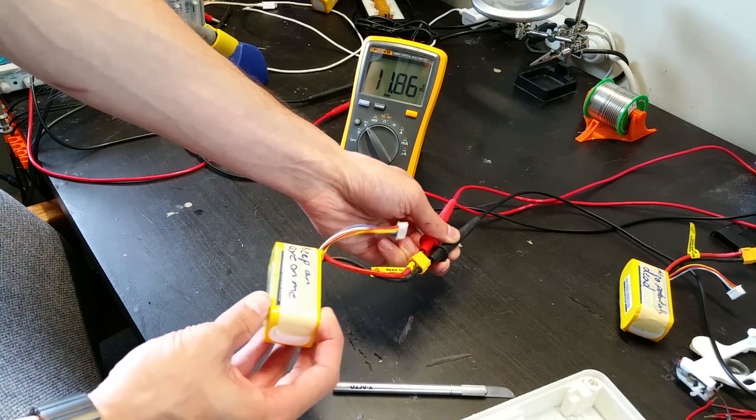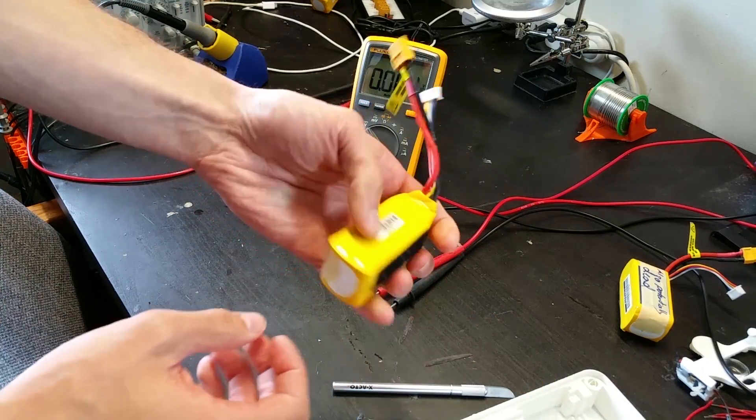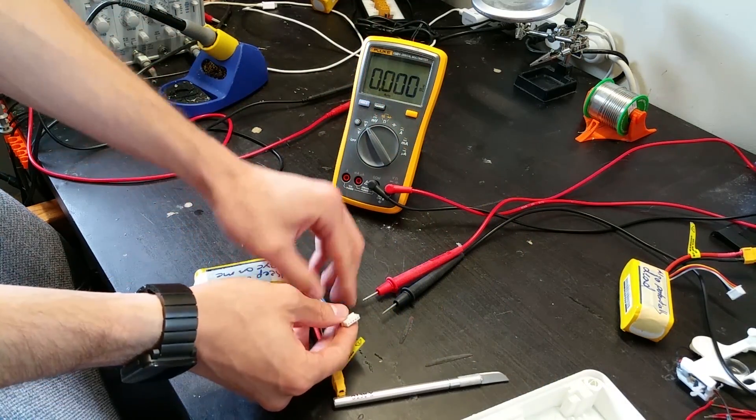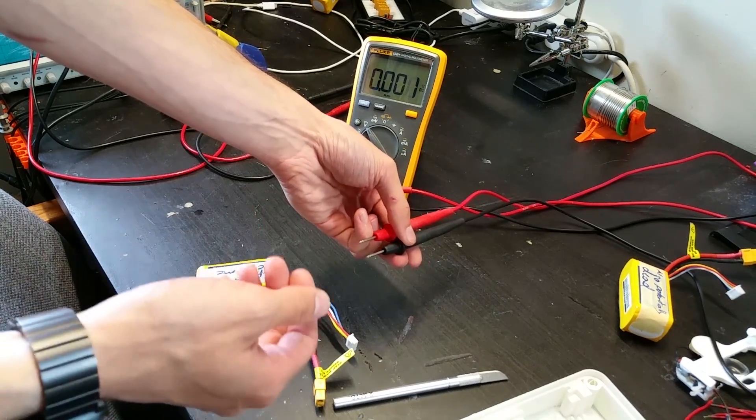So that's telling me that one of the cells in here is dead, because each cell is about 3.2 to 4.2 volts. So if we figure out which cell is down, then we can take a chance at recovering it.